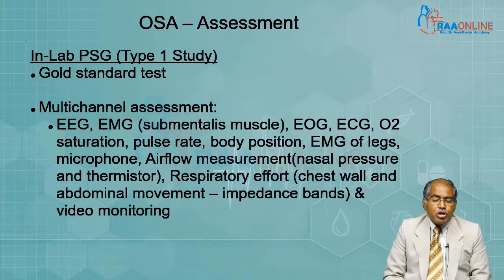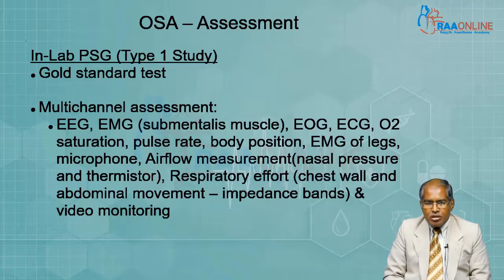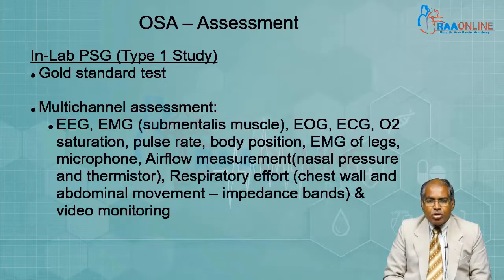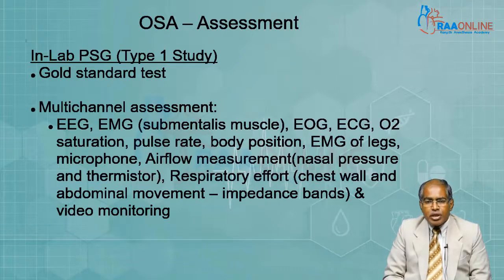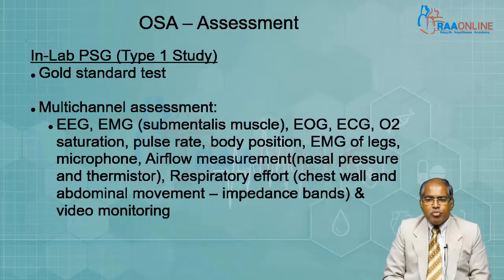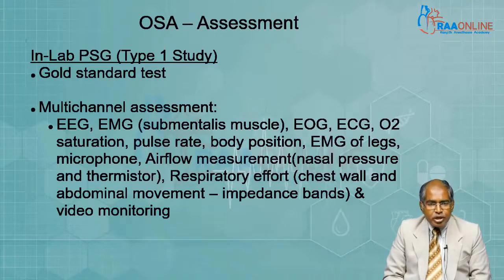The in-lab study, polysomnography, which is the type one study, is the gold standard test. It uses multiple channels to assess various activities, including electroencephalogram, electromyogram of the submentalis muscle, electrooculogram, ECG, oxygen saturation, pulse rate, body position, electromyogram of the legs for periodic limb movements, a microphone to detect snoring, airflow measurement using both nasal pressure and thermistor — nasal pressure flow is useful for hypopneas, while thermistor is more useful for detecting apneas — and respiratory effort using impedance bands on the chest and abdominal wall.